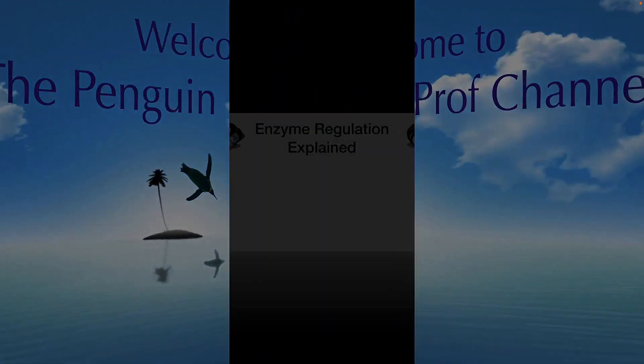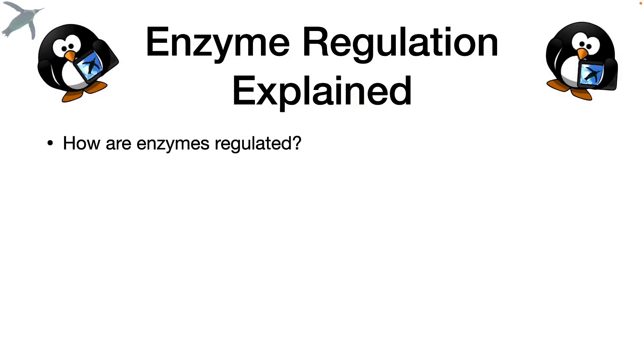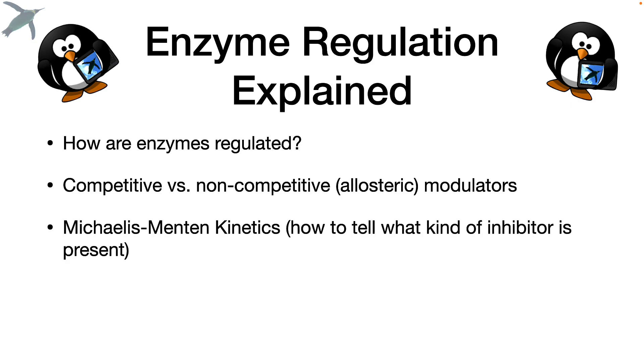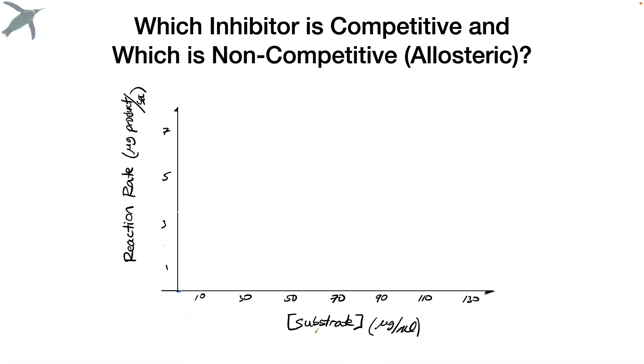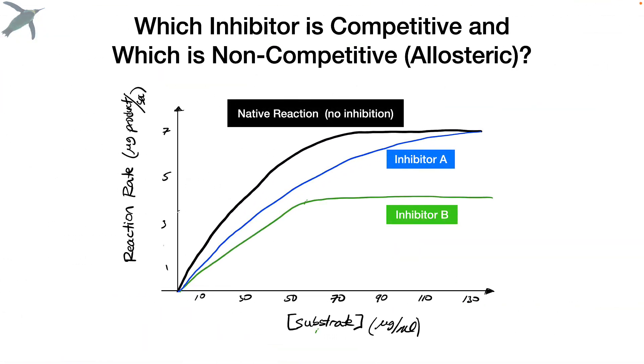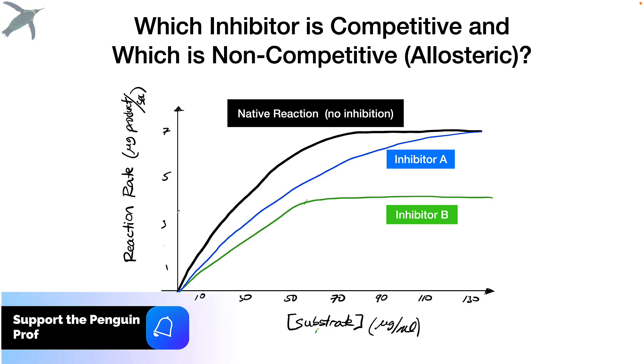Hello and welcome to the Penguin Prof channel. Today I want to get into enzyme regulation, those competitive versus non-competitive or allosteric modulators. I want to talk about Michaelis-Menten kinetics and as an example, I'm going to talk about Viagra because everybody wants to know how Viagra works. By the end of this video, you're going to be able to look at graphs like this and understand how to tell what kind of inhibition is actually going on.